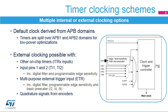External timer clocking allows counting of external events, or to have a counting period externally adjusted. The clock source can be provided by other on-chip timers, using one of the four internal trigger inputs, ITR1 through ITR4. Input pins 1 and 2 can also serve as external clocks, with the option of including digital filters to remove spurious events.